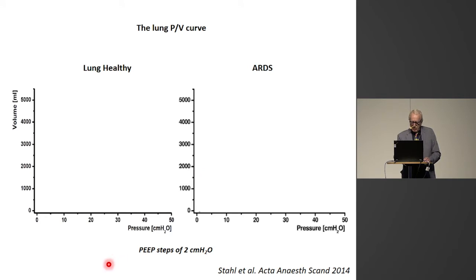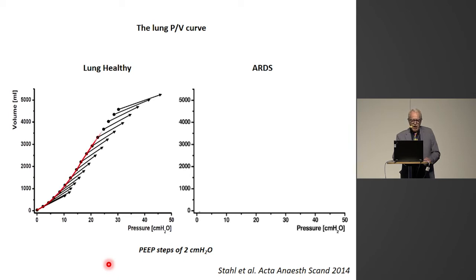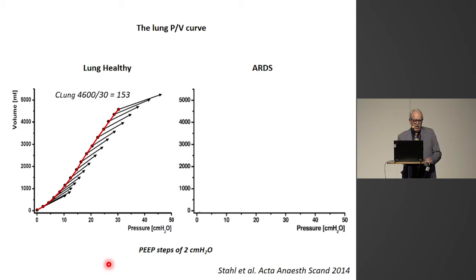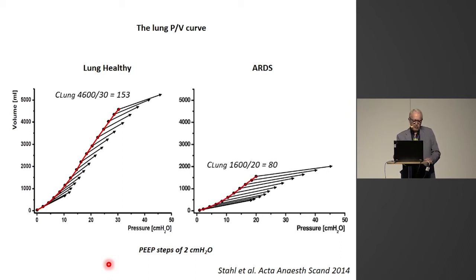So we know that the determinant of delta EELV is the size of the PEEP step and the lung compliance. Here we can see very rapid incremental PEEP steps of two centimeters at a time in a healthy lung. The red line is the lung PEEP curve, and the overall lung compliance is 153 — 4,600 milliliters over 30 centimeters. In ARDS with a baby lung, the lung PV curve gives 1,600 over 20, and the lung compliance is 80. This is how a PEEP step inflation of the lung can determine lung compliance.